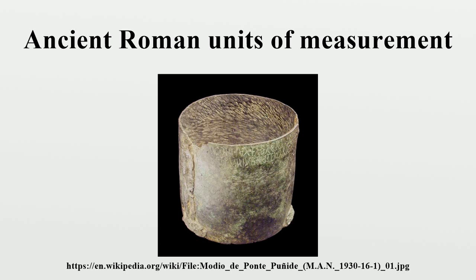The principal Roman units of length included others such as the schoinus, used for distances in Isidore of Charax's Parthian Stations and in the name of the Nubian land of Triacontaschoinus, between the 1st and 2nd cataracts on the Nile.